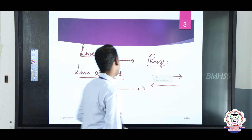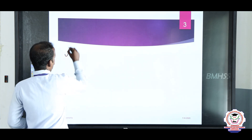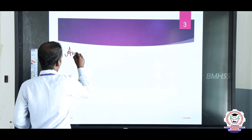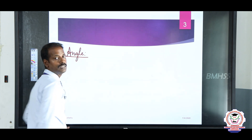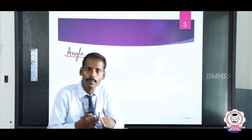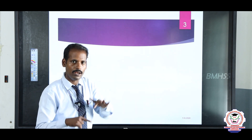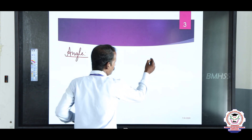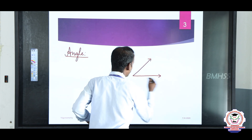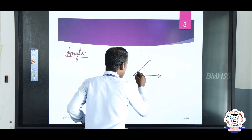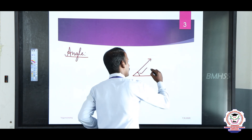The next one: angle. What is an angle? Two rays meeting at a common point is called an angle. Those two rays joining together make one angle — that is an angle.